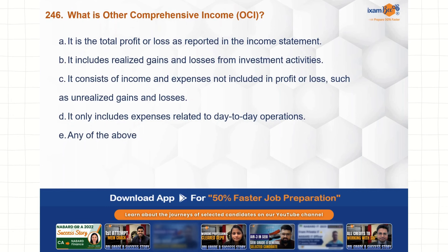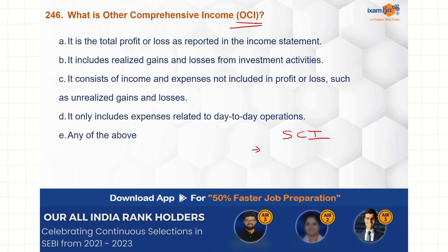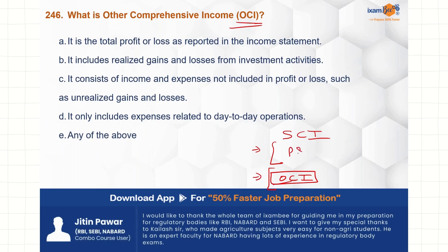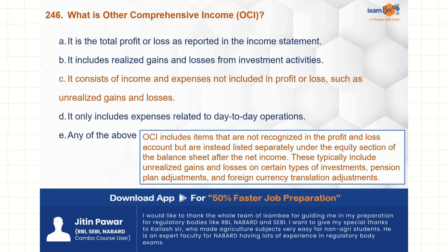What is other comprehensive income, jisko hum short form mein OCI bhi bolta hai? Aapka jo income statement hoti hai, that is called the statement of comprehensive income. Us ke andar ek to normal income aati hai puri, aur jo second wala part hota hai usko hum bolta hai other comprehensive income. Iske andar aapke hoti hai income aur expenses jo P&L account ke andar nahi include kie gaye — zyada tar is mein unrealized gains aur losses hoti hai. So C is the correct choice here.